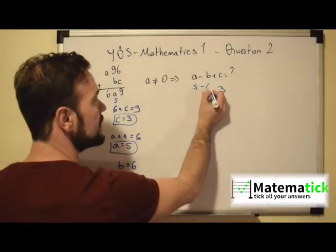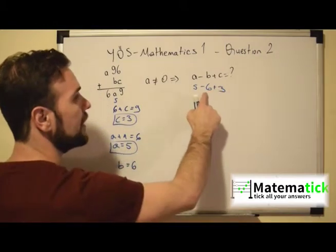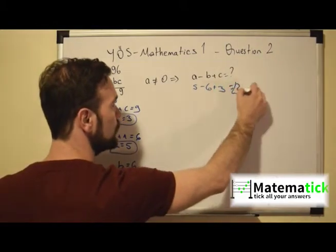So what do we have here? 5 minus 6 plus 3. So 5 minus 6 is minus 1 plus 3 equals 2. And that is the right answer.